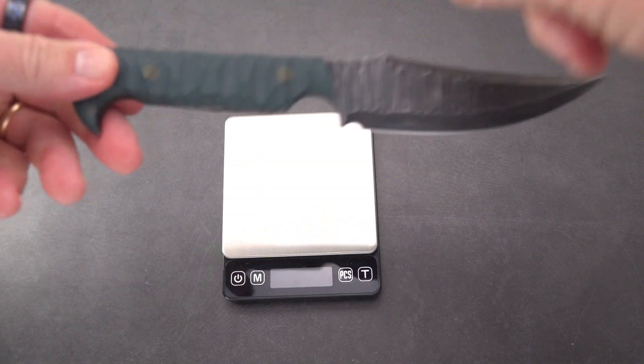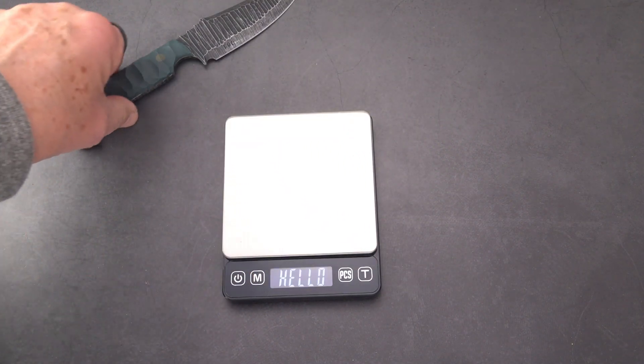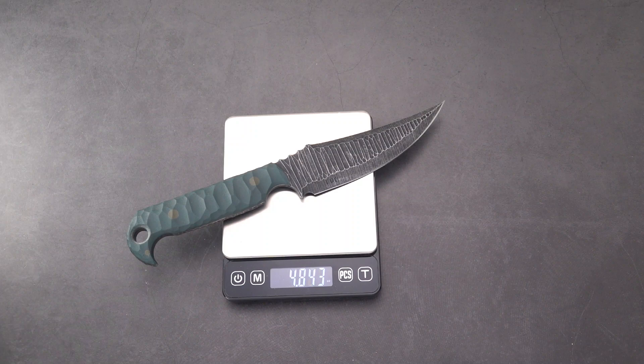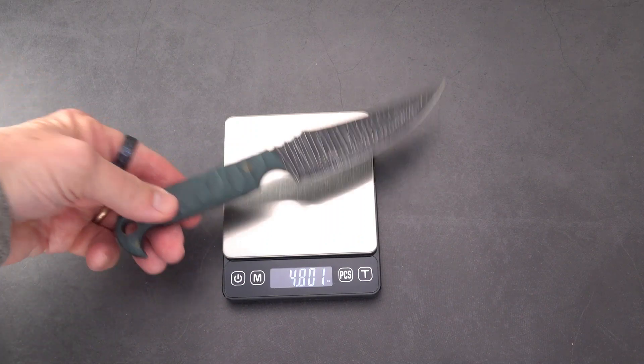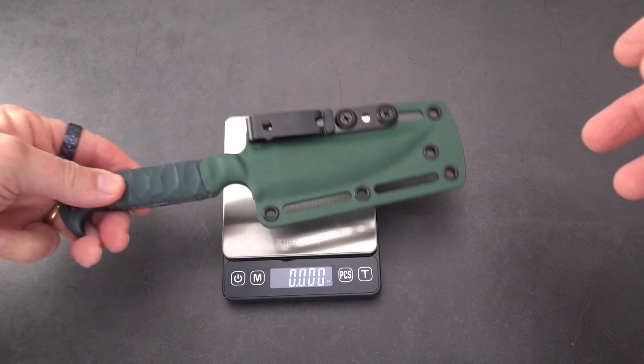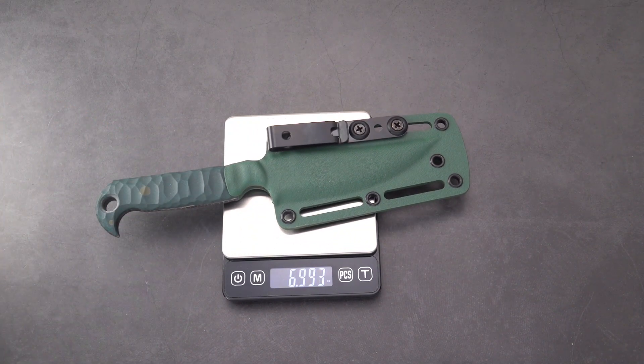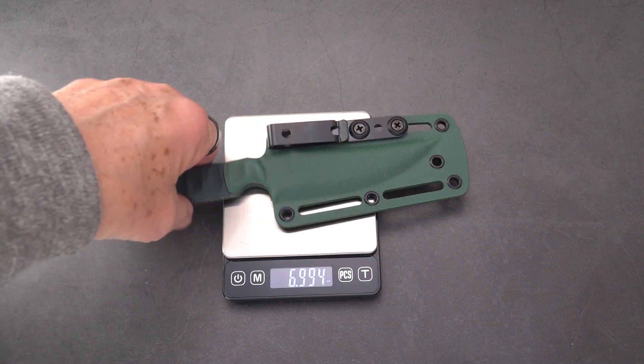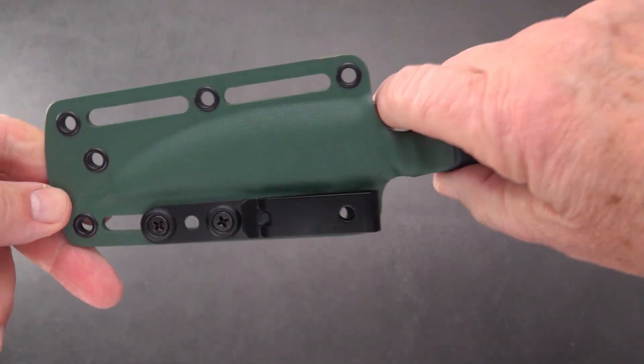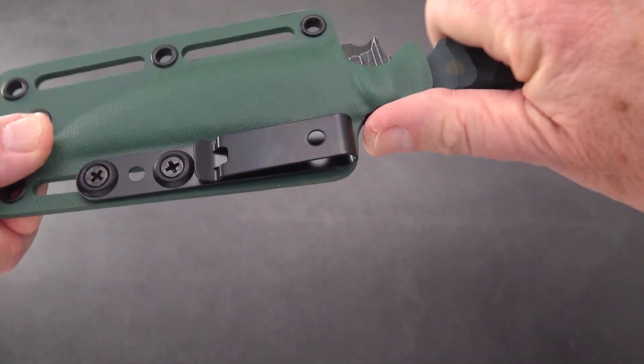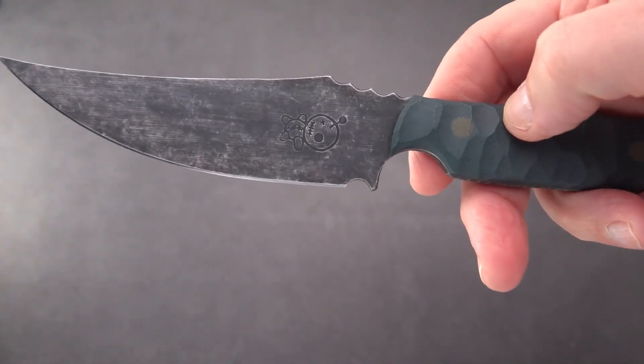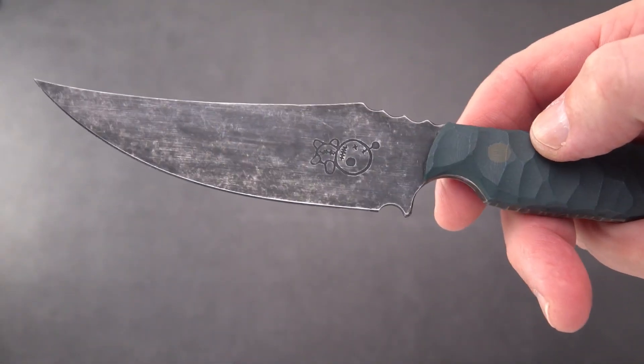It's a pretty light knife. So I'm going to give you the weight with and without the sheath. Of course, it would help to turn the scale on first. And we have 4.8 ounces of the knife alone. And with the sheath, nice lock up on the sheath. We have 6.99, call it 7 ounces.